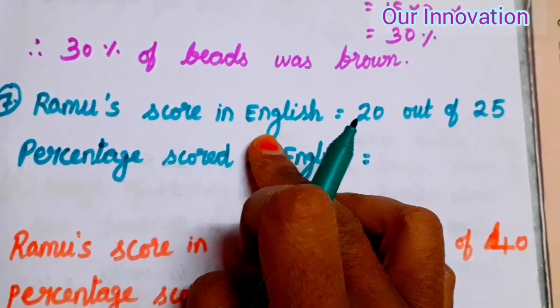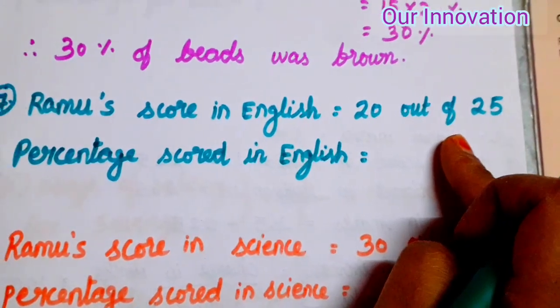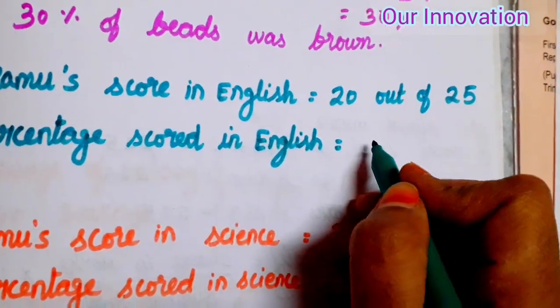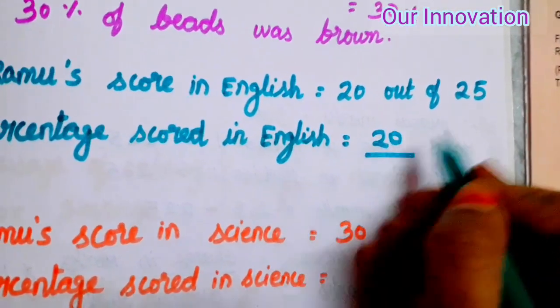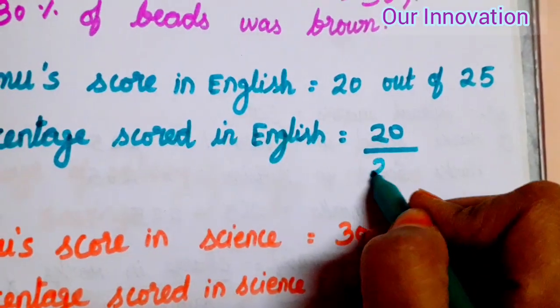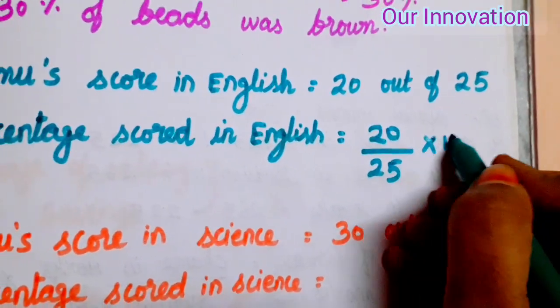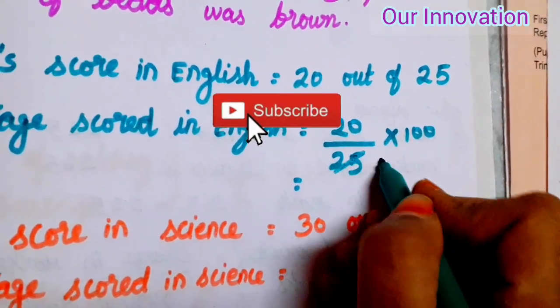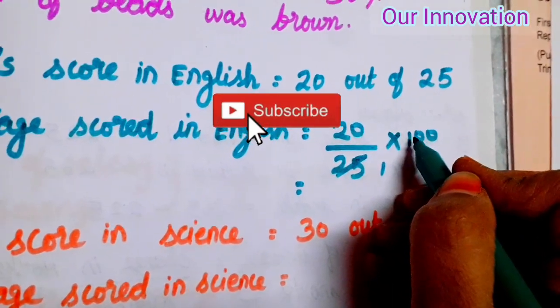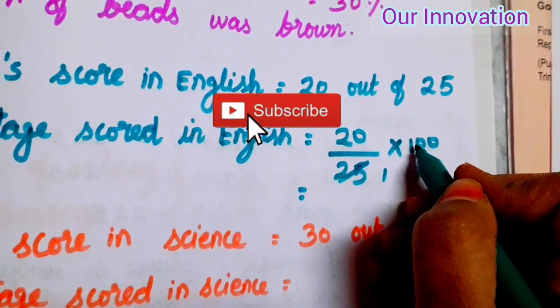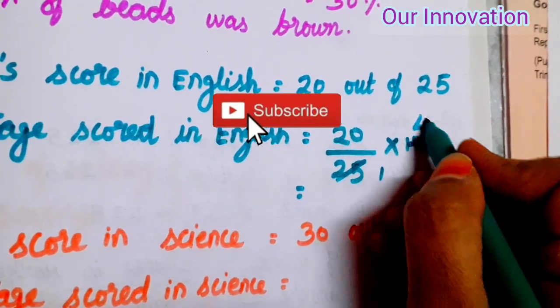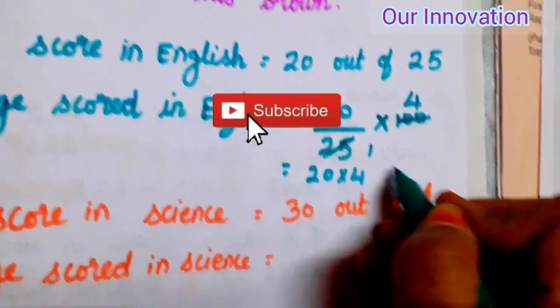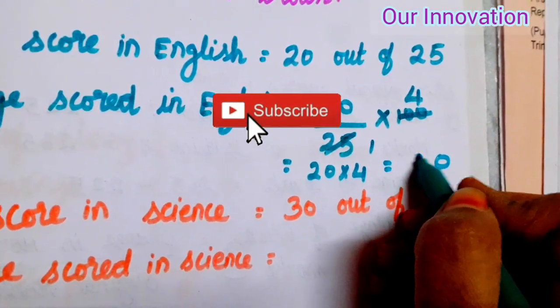Ramu's score in English is equal to 20 out of 25. So percentage scored in English is equal to 20 by 25 into 100. 1 into 25 is 25, so 25 into 4 is 100.